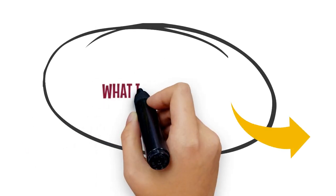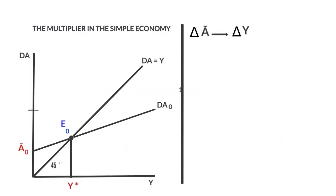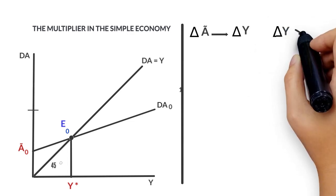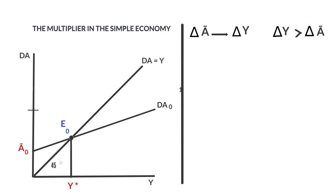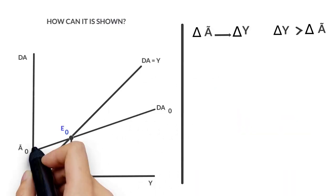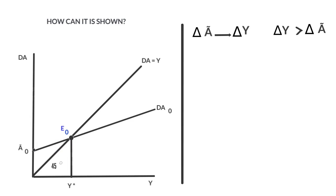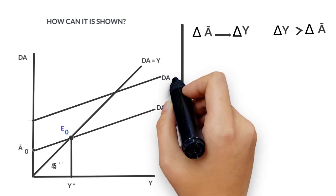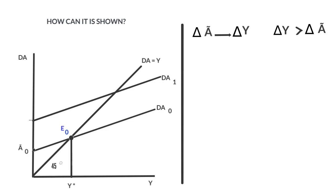What is its value? Graphically, it can be shown that the final increase observed in income is higher than the initial increase of the autonomous expenditure. Starting from the equilibrium point E sub-zero in the income expenditure model, there is an increase from A to A', so that the aggregated demand curve shifts up in parallel until the aggregated demand 1.